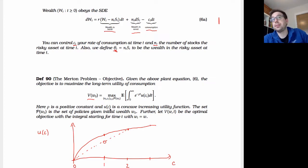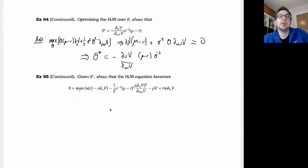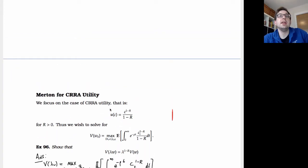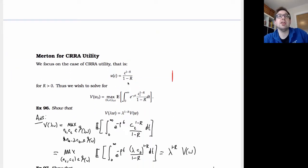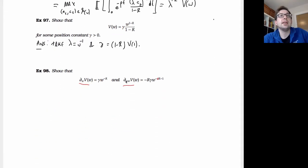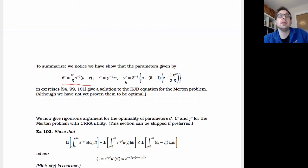Now, we came up with a solution to this Merton problem. Specifically, we looked at the case where the utility function that we consider is a CARA utility, so constant relative risk aversion, which is a specific form of utility function. For that we found some parameters here, theta, which is the amount of money that we invest in the stock, so it's some proportion of our wealth, and then C, which is our optimal rate of consumption, as given by some parameter gamma here. We showed that this is a solution for the HJB equation, but we didn't get quite as far as proving rigorously that this is optimal. So we're going to take a little bit of time just to prove that indeed this is optimal.